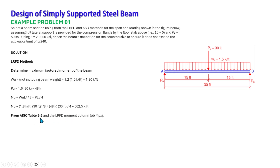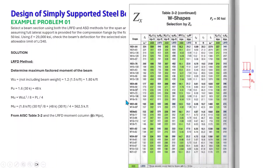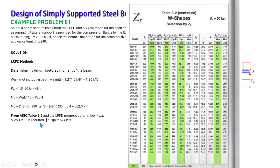From AISC Table 3-2, in the LRFD moment column, we need to find the nearest design capacity at or above 562.5 kip-feet. Looking through the values — 668, 600, 574 — the nearest value just above 562.5 is 574 kip-feet, which corresponds to W24×62. So W24×62 is required, with a capacity of 574 kip-feet.